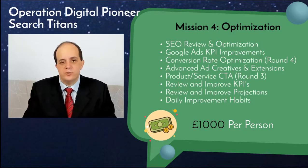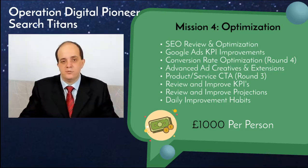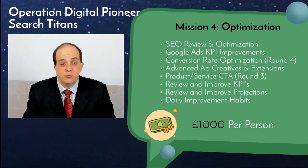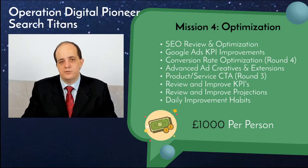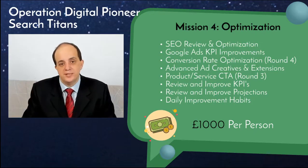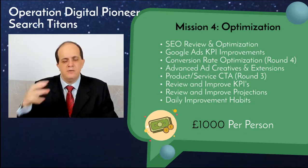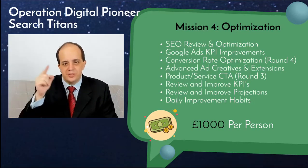Let's say you're in position one for a keyword and you're getting a thousand impressions — a thousand people typed it in and you were in position one a thousand times. How many clicks did you get? Three percent? Thirty percent? Nobody gets a hundred percent, because there are ads above your position one listing, and there's probably a Google Maps result right above your listing — all of these things distract the consumer from clicking on your link.